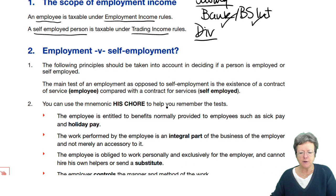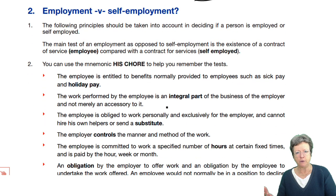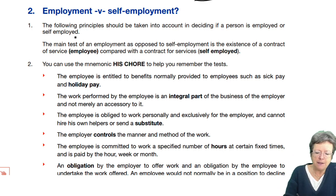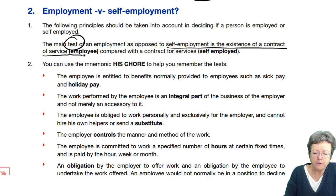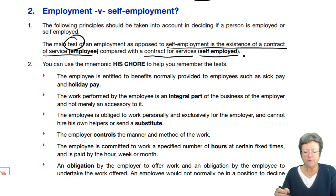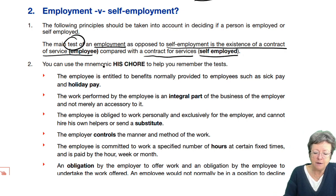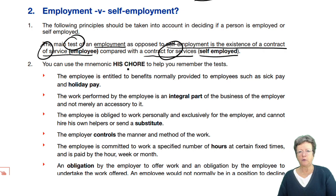An employee is taxable under employment income rules, which is this chapter, whereas a self-employed person is taxable under trading income rules, which are in different chapters. These principles follow this main test: self-employed is defined by the existence of a contract for services, compared to a contract of services for an employee. So employees have a contract of services; self-employed have a contract for services.